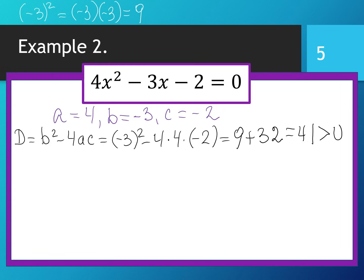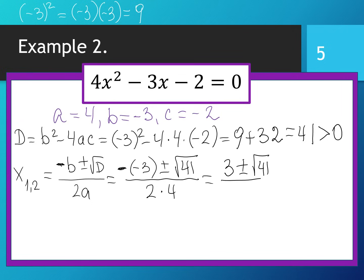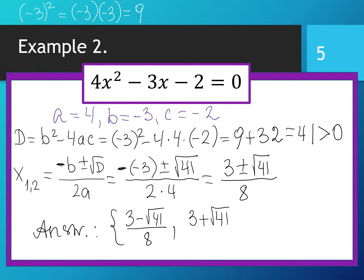Our discriminant is positive, greater than 0, so the quadratic equation has two different roots found using the formula (-b ± √D) / 2a. With b = -3, applying the negative: -(-3) ± √41 over 2 × 4. Minus negative 3 gives positive 3, so the roots are (3 ± √41) / 8. Our quadratic equation has two roots: (3 - √41) / 8 and (3 + √41) / 8.